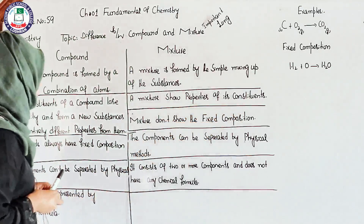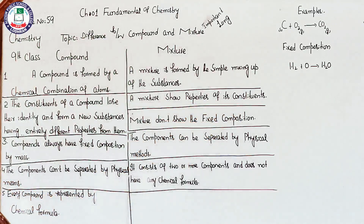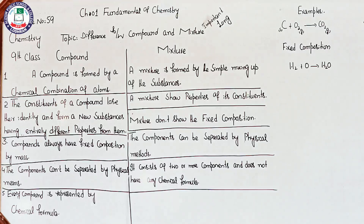In a mixture, the constituents show their own properties. For example, if you simply dissolve sugar in water, when you sip or drink the sugar water you will feel the taste of it. If you add some other things, you will easily identify them. If you make a mixed bowl of salad with different types of vegetables and fruits, you will also taste the individual components — the mixture shows the properties of its constituents.